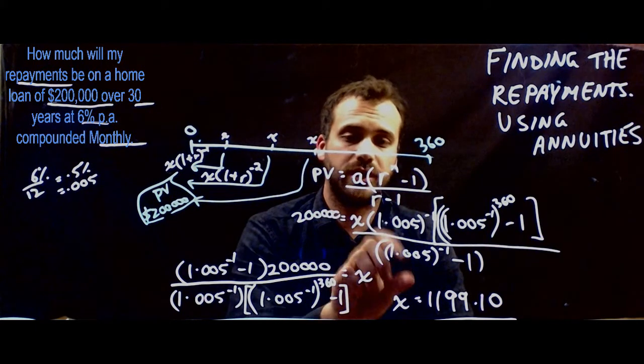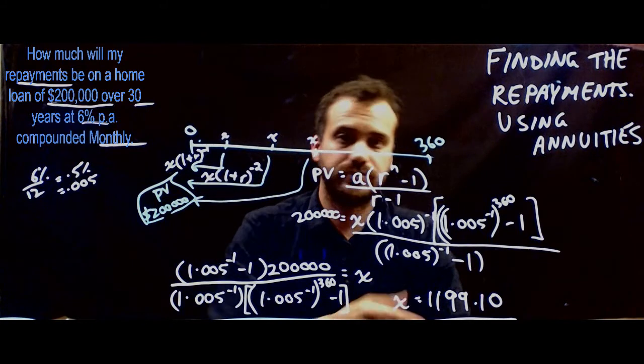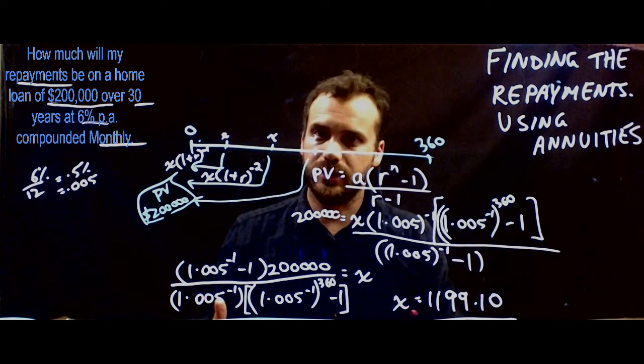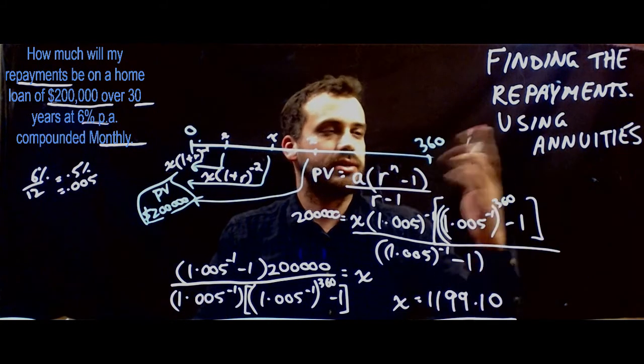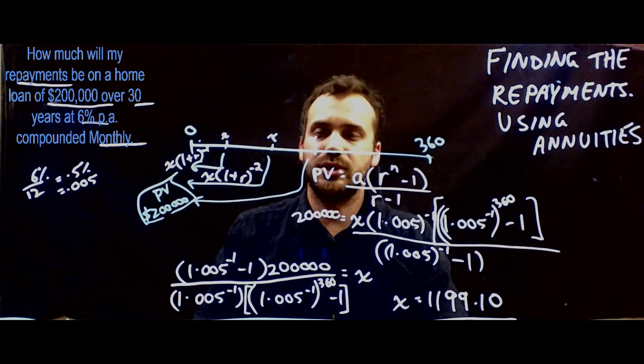Then you just need to deal with it, shove some stuff in, rearrange, solve it, check it with your TVM. Okay. That's finding the repayments using annuities.